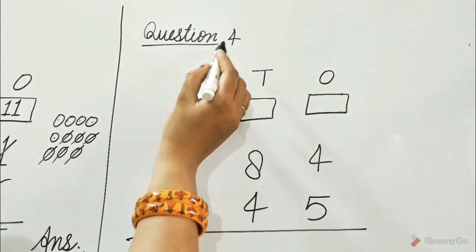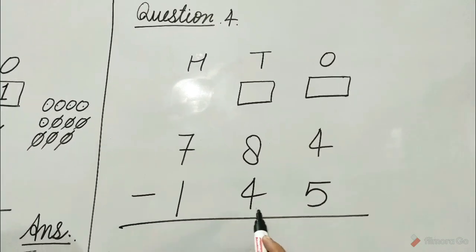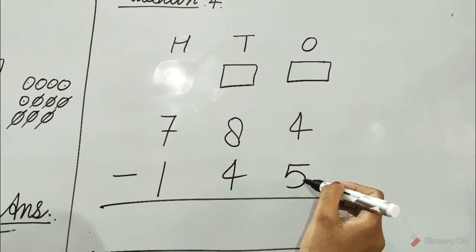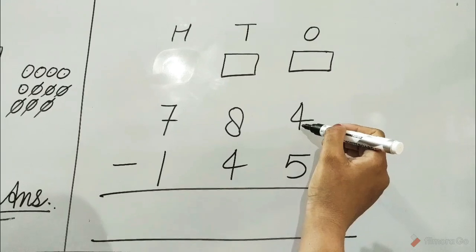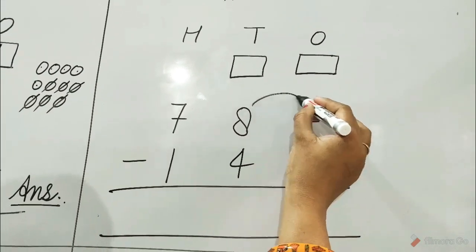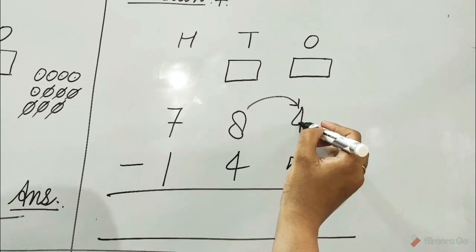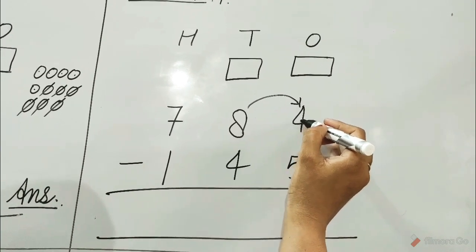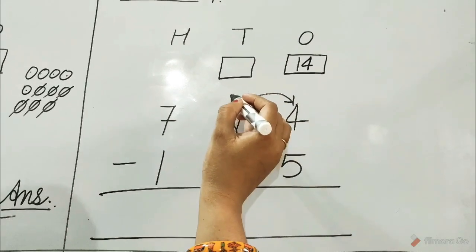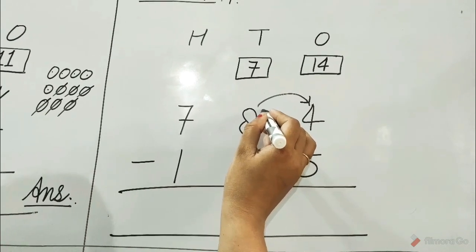Question number 4: 784 minus 145. Look at the ones column. 5 is bigger than 4 so it cannot be subtracted. Borrow 1 ten from the tens column and add it to the 4 ones. 1 ten plus 4 ones is equal to 14 ones, and 7 tens are left in the tens column.